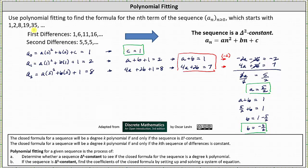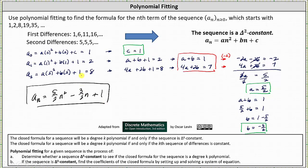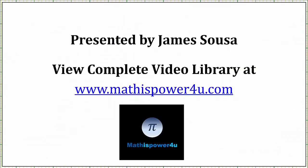The closed formula for the original sequence 1, 2, 8, 19, 35, and so on is a sub n equals an squared plus bn plus c, which is five halves n squared minus three halves n plus one. I hope you found this helpful.